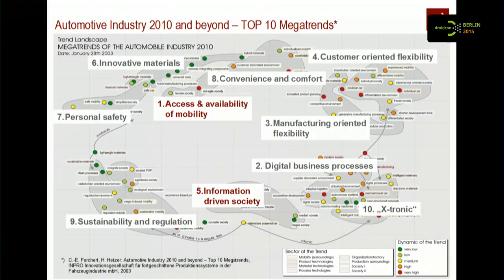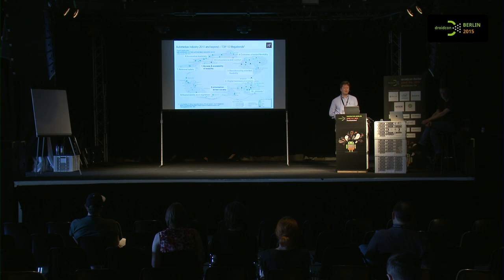As engineers, we found out that innovative materials go along with personal safety and also with convenience and comfort for driver and passengers. On the other hand, the customer wants flexibility, and that flexibility is provided by the manufacturing system. We discovered the X-tronic, the mechatronic, the electronic IT trend in cars — that was easy to understand. What we didn't understand at once was how the two trends of mobility and an information-driven society go together. These are very obvious megatrends, but in 2003 we had no idea at that point.